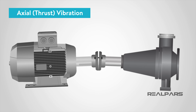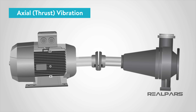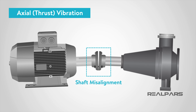Axial vibration is a longitudinal shafting vibration, or parallel to the shaft of a motor. For example, a shaft misalignment could cause axial vibration.